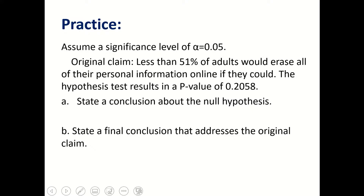Now let's look at this practice problem. Assume we have a significance level of alpha equals 0.05, and our claim is that less than 51% of adults would erase all their personal information online if they could. The hypothesis test result is a p-value equals 0.2058. First, let's write down the null and alternative hypotheses. The claim is about the population proportion: p is less than 0.51.